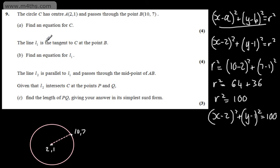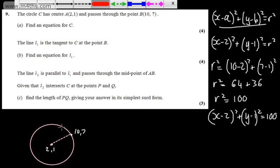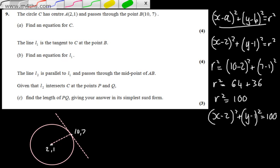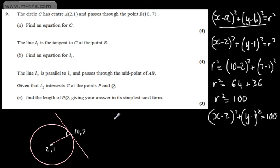We're told the line L1 is the tangent to C at the point B. In part B, for four marks, we need to find an equation for L1. All we need for a straight line is a point it goes through and a gradient. The tangent meets the radius at right angles, so I'm going to call M1 the gradient of the radius.